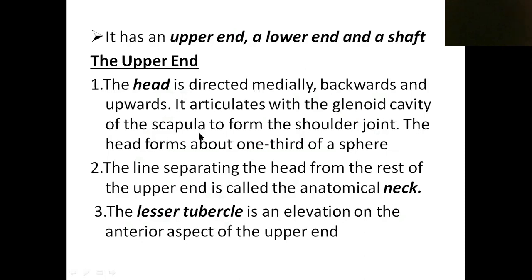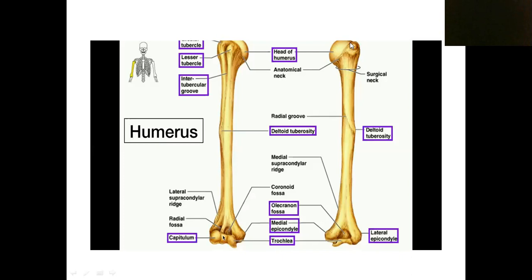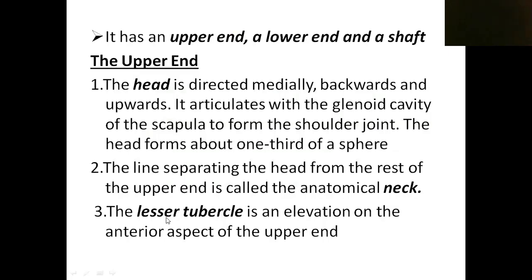The head articulates with the glenoid cavity of the scapula to form the shoulder joint, and it forms one third of a sphere. The line separating the head from the rest of the upper end is known as the anatomical neck.